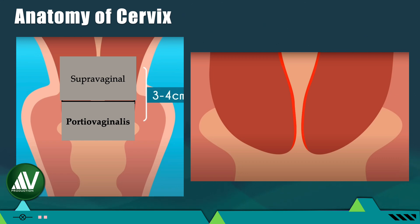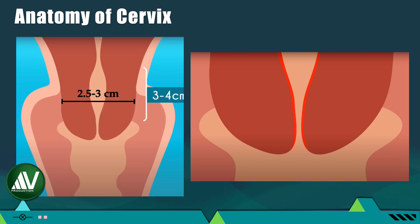The channel inside the cylindrical portion of the cervix is called the endocervical canal, which has two ends. The opening towards the uterine cavity is called the internal cervical os, which is the narrowest part of the uterocervical canal. The lower opening into the vagina is called the external os.